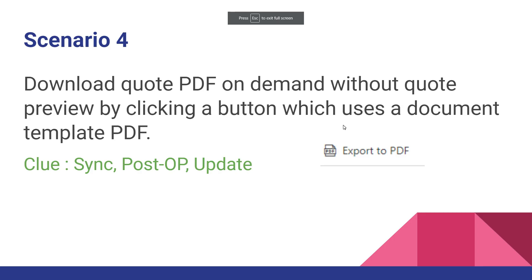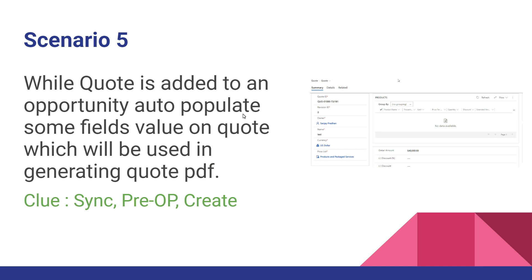Once the dummy field is updated, it triggers a synchronous plugin which fetches the quotation PDF template from the system and downloads it, or attaches it as a note in the details area of the quotation. To do this there is no other way — you have to write a plugin. Create a 'Download PDF Quotation' button, on button click update a dummy field, and on the change of that dummy field call a synchronous plugin to fetch and attach the quotation PDF.